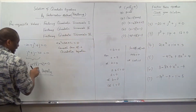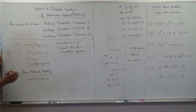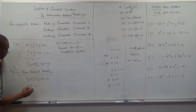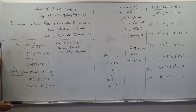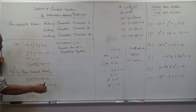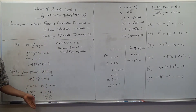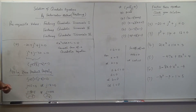Here we have J plus five times J minus four equal to zero. That means J plus five equals zero, or J minus four equals zero. If J plus five equals zero, J will be negative five — zero minus five. Or if J minus four equals zero, J will be zero plus four, so J will be four. So J will be negative five or four — those are the two solutions.